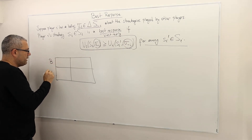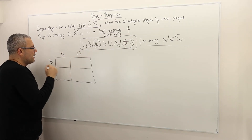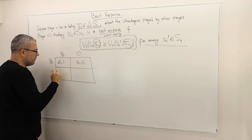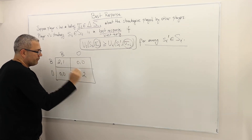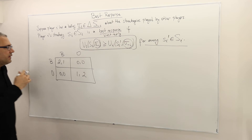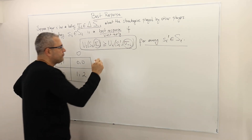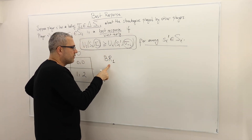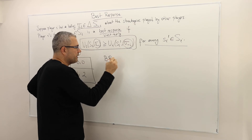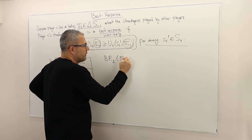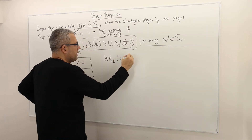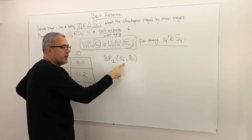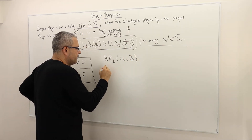So we have B and S strategies. The payoff matrix is: (B,B) gives (2,1), (B,S) gives (0,0), (S,B) gives (0,0), and (S,S) gives (1,2). Let's calculate the best response for the first player when the second player plays sigma-2 equals B — a pure strategy.